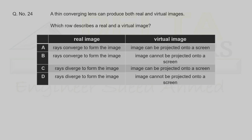Question 24. A thin converging lens produces real and virtual images. For a real image, rays converge — options A and B both state this. For a virtual image, the image cannot be projected on a screen; option A incorrectly says it can. Correct option is B.